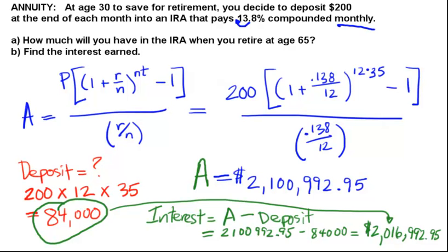That's pretty powerful. Granted, that was a pretty good interest rate of 13.8%, and we did this for 35 years. When those two numbers are pretty large, you get a lot of money out of it. So that's how an annuity works.